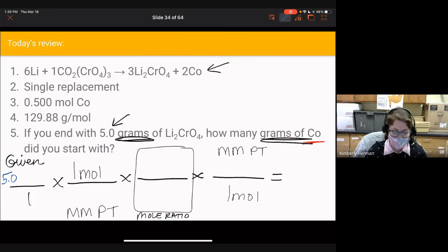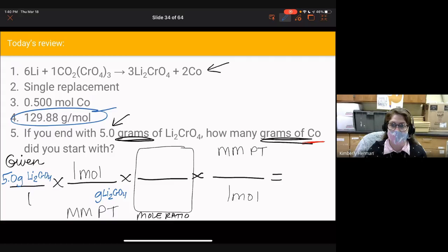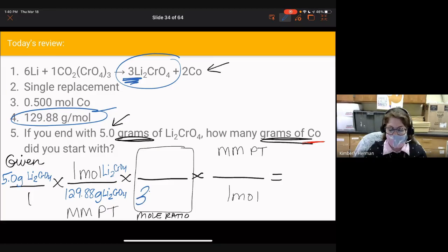We have 5.0 g of Li2CrO4. That gram amount of Li2CrO4 goes on the bottom here. We already calculated the molar mass in number 4 by adding up 2 Li's, 1 Cr, and 4 O's, so we'll put that 129.88 g/mol right here. We'll fill in our Li2CrO4 here, and then we find it in our balanced chemical equation, which tells us the moles to use in our mole ratio.